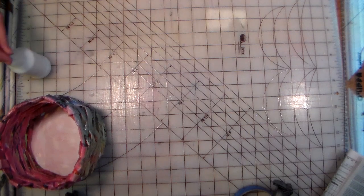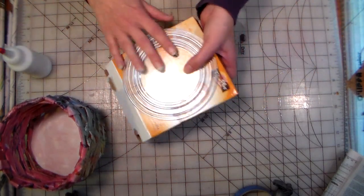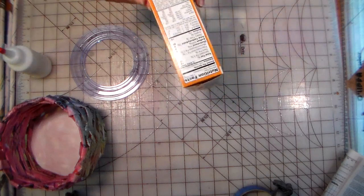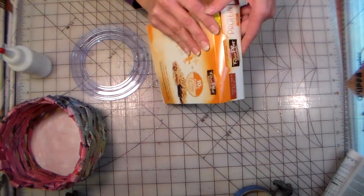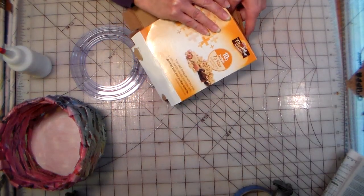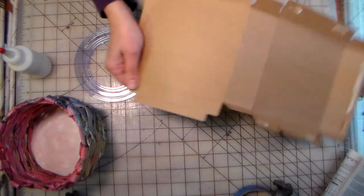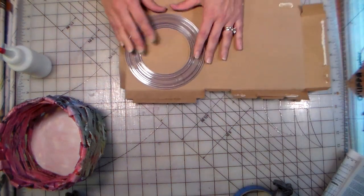Alright, so the next thing we need to do is we need to make the bottom for our basket. So open up a box as carefully as you can. You should be able to find all your supplies right out in your recycling bin, or ask mom and dad to save them for you.